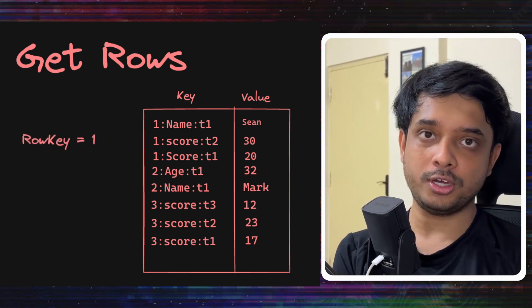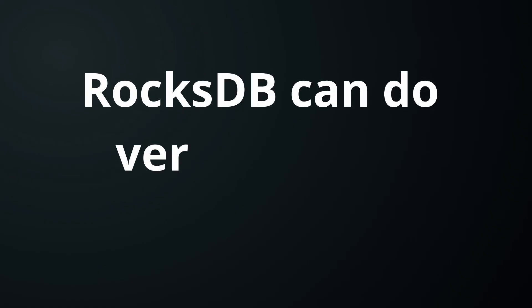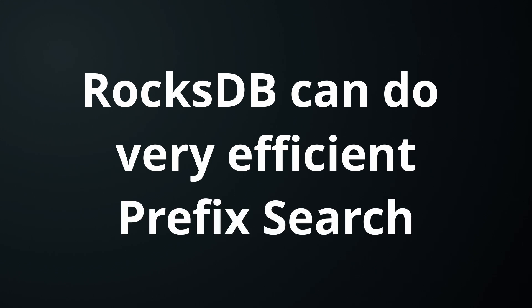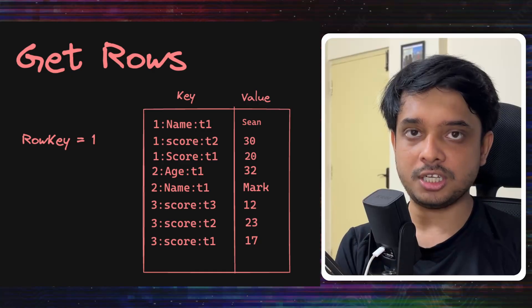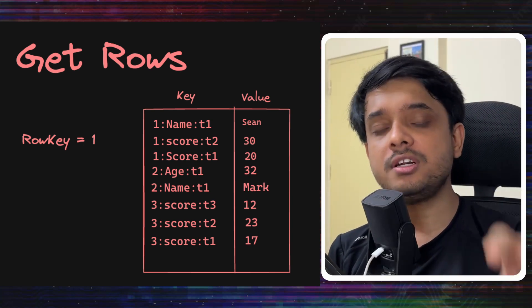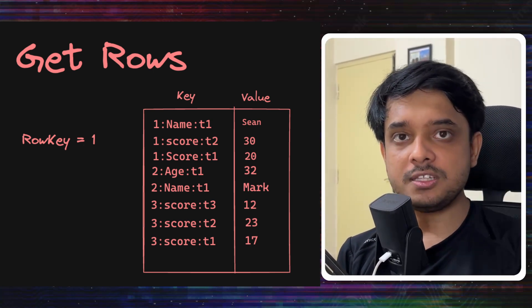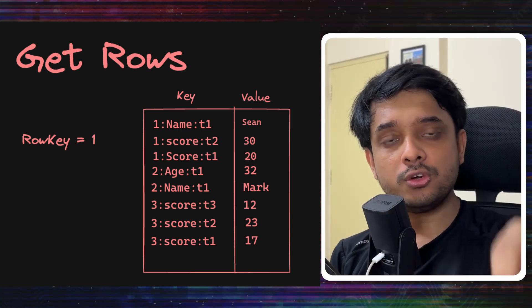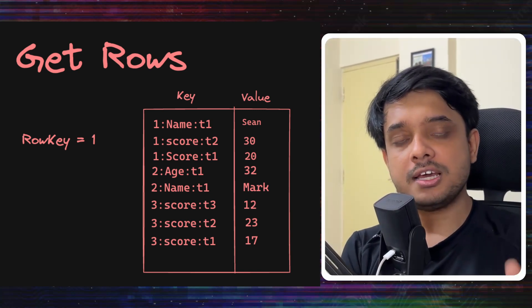RocksDB can do a very efficient prefix search. Since all the keys in the RocksDB key value store are sorted, we can do a very efficient prefix search. This means you will give RocksDB a prefix and it will return you all the keys and the values that start with the prefix or whose keys start with that prefix.